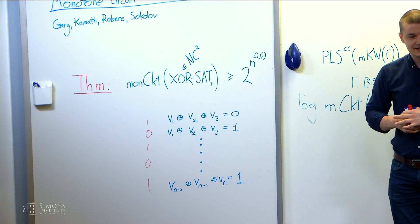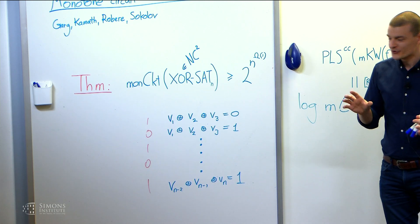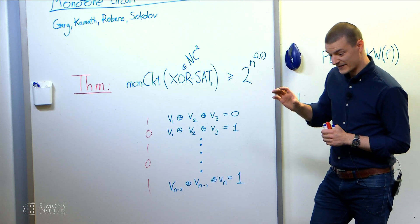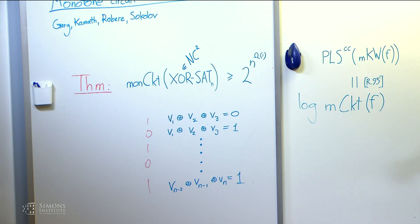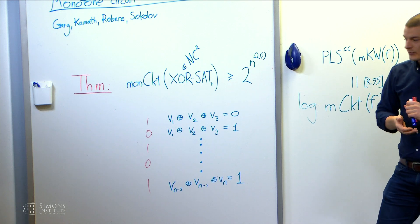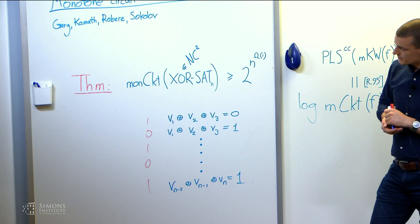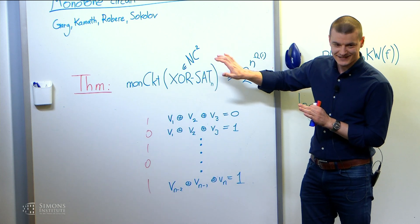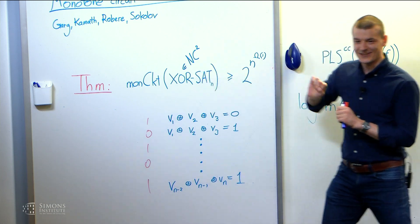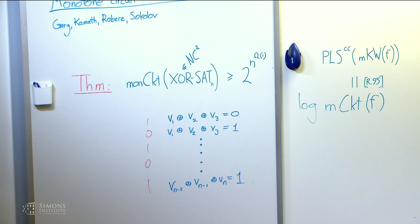I guess I could still say that another monotone versus non-monotone candidate is the perfect matching function. So widely conjectured that you need exponential size monotone circuits. Only a quasi-polynomial lower bound is known. But even perfect matching, it's not quite in NC. It's in randomized NC. So this is even slightly better than that. So yeah, it's solid. This is interesting.